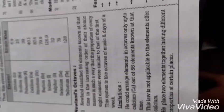Newlands classified 56 elements known at that time in the increasing order of their atomic masses in such a way that properties of every eighth element were similar to that of the first. So this system is like the octaves of music and days of a week. That's why it's called the law of octaves.